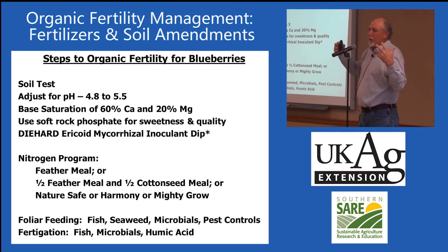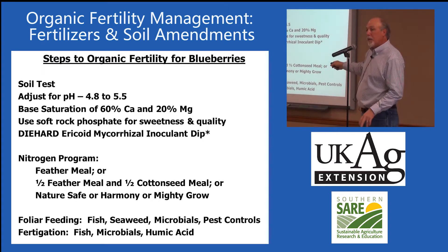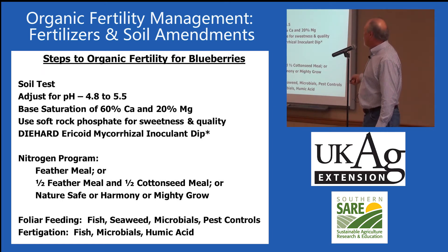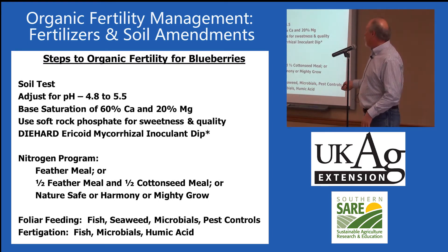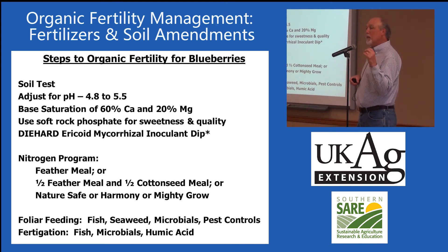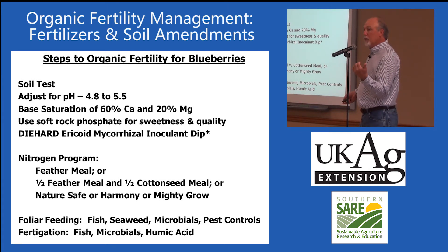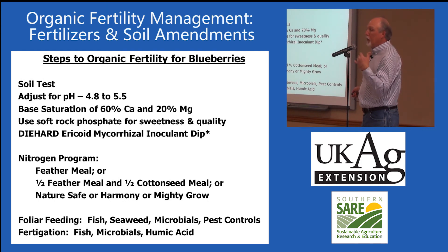Alternatively, use one of the bagged pelletized products like NatureSafe, Harmony, or Mighty Grow — that's the nitrogen program. In addition, it's popular in organic and eco-agriculture to do foliar feeding and fertigation. Fish hydrolysate is soluble — it can be injected or sprayed. A classic blend with a lot of synergy is fish and seaweed together. Microbials can include compost teas or purchased microbial inoculants. You can also add all of this in when you're doing your pest control as an all-in-one approach.